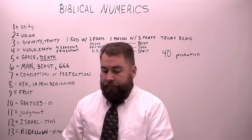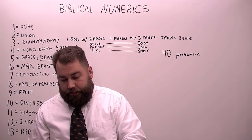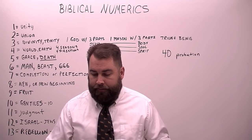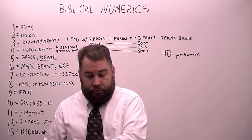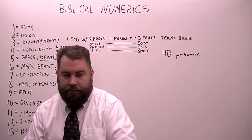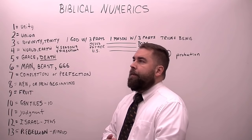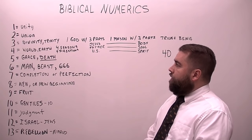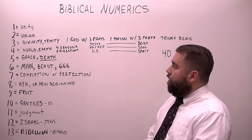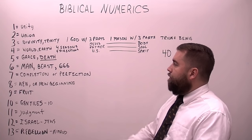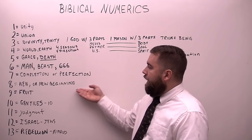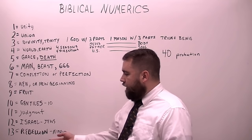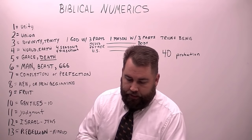There are other numbers mentioned in scripture such as 70, 120, and 144, but it's not necessary to pursue the subject further — Larkin says he'll stop there. It is something I think we should at least be familiar with, and that's why I went into this today. So that's a short sermon, but: one is unity, two is union, three is divinity, four is world, five is grace or death, six is man and beast — 6-6-6 — seven is completion or perfection, eight is new beginning, nine is fruit, ten is Gentiles, eleven is judgment, twelve is Israel, thirteen is rebellion, and forty is probation.